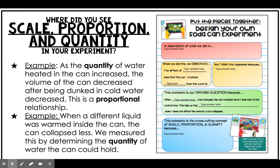For example, let's say I increased the quantity of water in my can, and then when I dunked the can in cold water, the volume of the can decreased. This would be a proportional relationship — the proportion of water I put in the can is proportional to the amount that the can collapses. Another example: if we used a different liquid and you saw that your can collapsed less, we could determine this by measuring the quantity of water the can could hold. We can use quantity to take data and make a statement about our results.